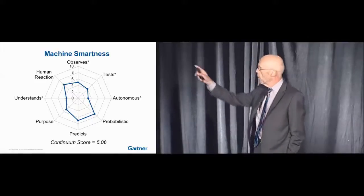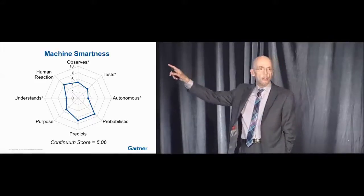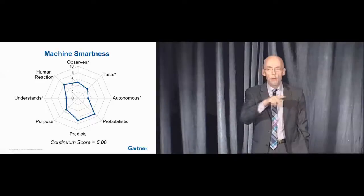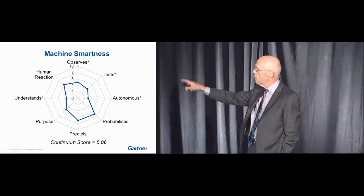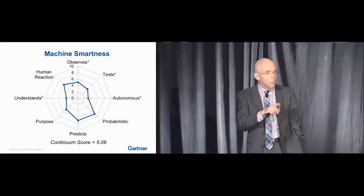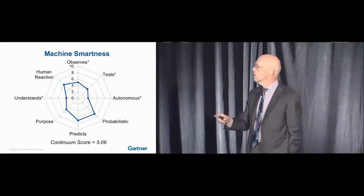I urge you to ignore the blue line. That's just an illustration of how we might rank, or evaluate rather, a family of smart machines. I want to use this diagram to help you understand what we're talking about. What are the key characteristics of smart machines?